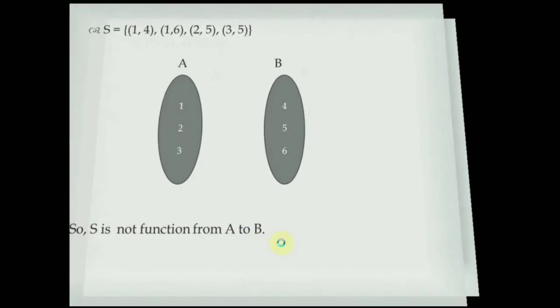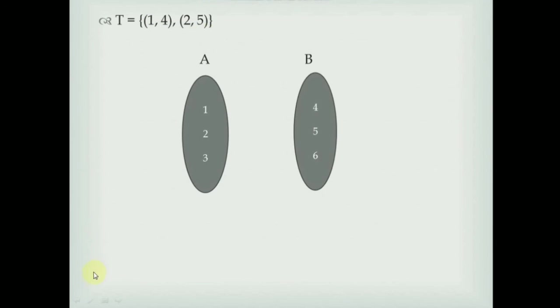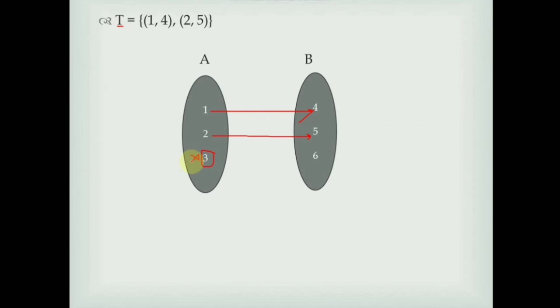Consider another subset T = {(1,4), (2,5)}. Here, 1 is paired with 4 and 2 is paired with 5, but 3 is not paired with any element from set B. This again contradicts the definition of a function — every element from set A must have exactly one image from set B. Since 3 has no image, T is not a function from A to B.